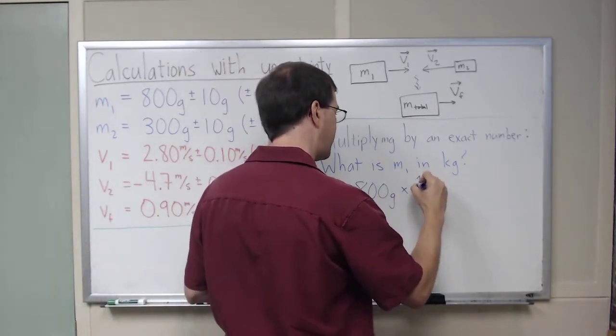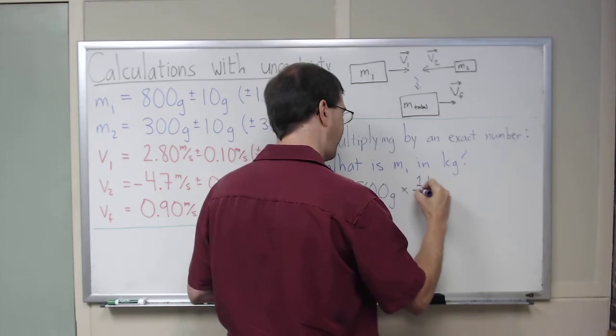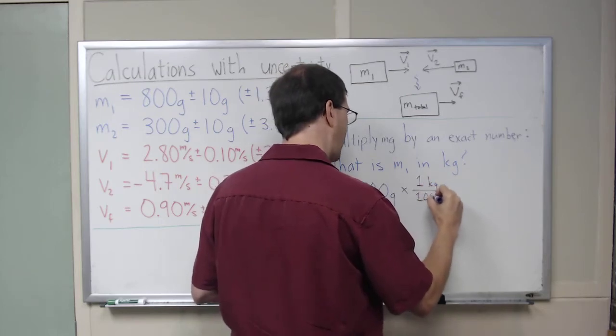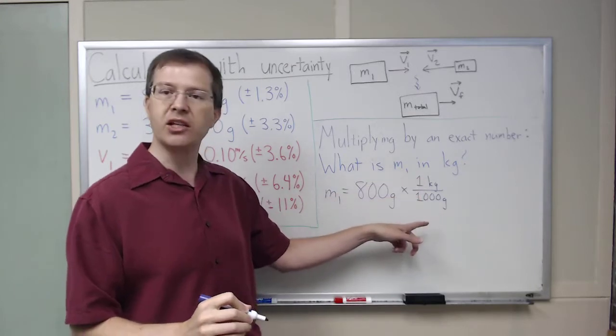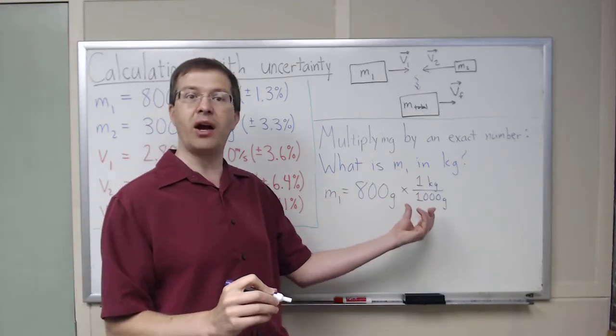times 1 kilogram divided by 1,000 grams. We know those are equal. 1 kilogram is the same thing as 1,000 grams, so this is the same as multiplying by 1 in a complicated way.